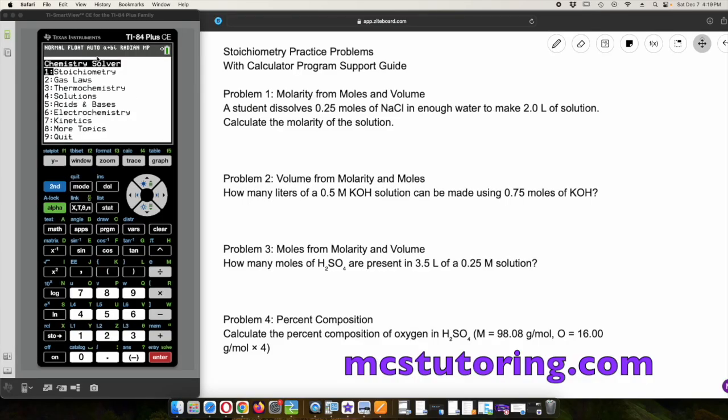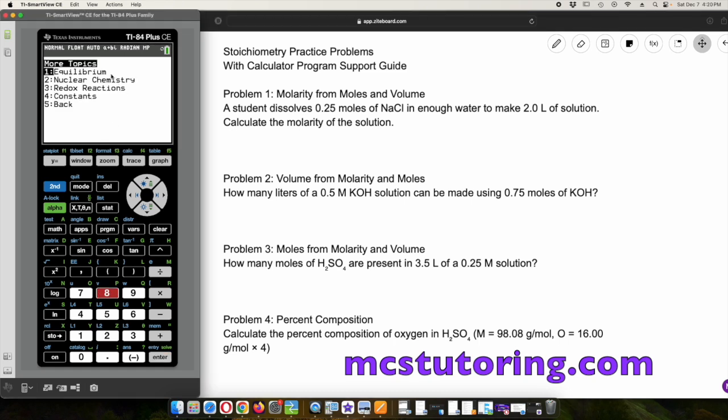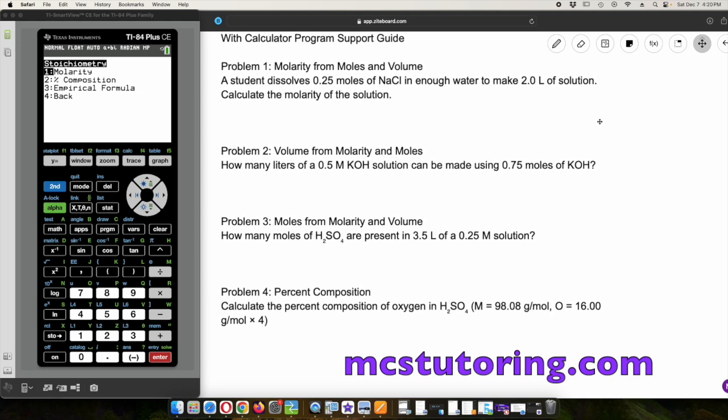Here's the Chemistry Solver main menu. First is stoichiometry, then there are gas laws, thermochemistry, solutions, acids and bases, electrochemistry, kinetics. And then the more topics are going to include equilibrium, nuclear chemistry, redox reactions, and a whole load of constants. Let's go to the stoichiometry. We're basically limited to three topics here: molarity, percent composition, and empirical formula.